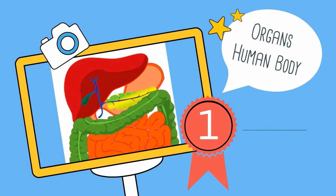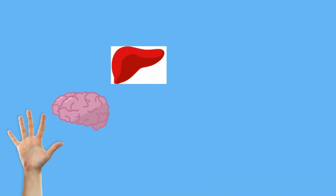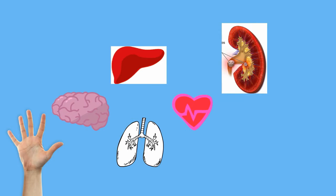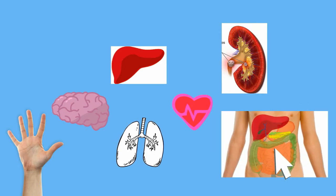There are over 70 organs in our body so I chose 10 that I consider the major organs. The 10 that I chose are the skin, the brain, liver, lungs, heart, kidneys, bladder, stomach, spleen, and intestines.